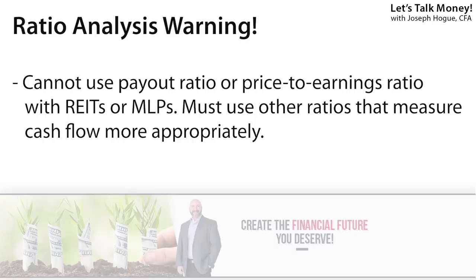A warning here though: you cannot use this payout ratio for companies with a high amount of depreciation. This is going to include real estate stocks — so those REITs — or Energy Master Limited Partnerships, MLPs. The problem is that these companies report so much depreciation on the income statement, that tax write-off from owning property or capital assets, that it totally skews net income lower. The payout ratio for REITs and MLPs will tell you nothing because net income is an even worse measure here than it is for a lot of other stocks.